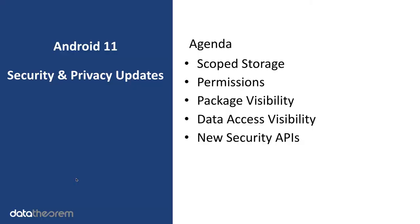At a high level, Android 11 brings changes in terms of user privacy as well as offering new and updated APIs that developers can leverage to increase security within their apps. Broadly, Android 11 brings about five changes: first, additional access control over data storage; second, an improved permissions model; third, stricter controls on package visibility to other apps; fourth, data access visibility; and fifth, new APIs.